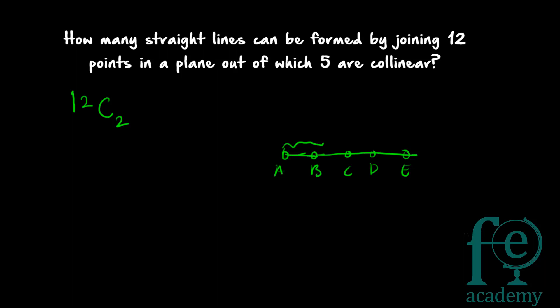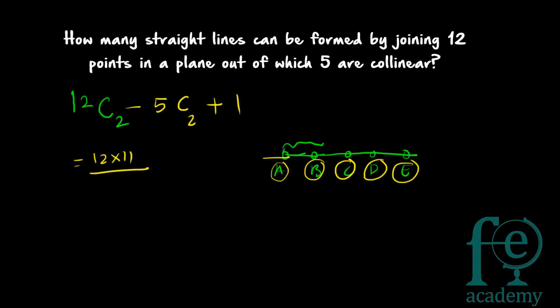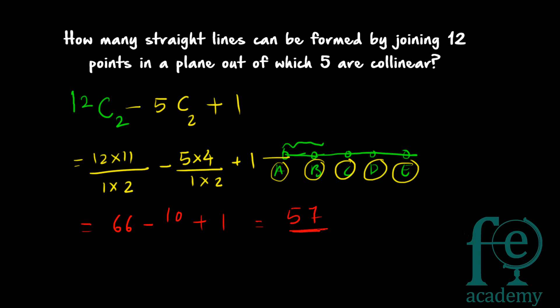Since those 5 collinear points all lie on one straight line, selecting any 2 of them gives no additional line. So you subtract 5C2 from 12C2, but add back 1 because that one line through all 5 points still counts. Answer = 12C2 − 5C2 + 1 = (12 × 11)/(1 × 2) − (5 × 4)/(1 × 2) + 1 = 66 − 10 + 1 = 57. So 57 is the final answer. Thank you for watching.